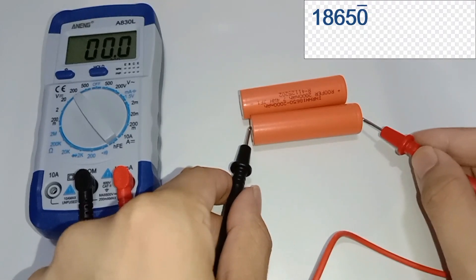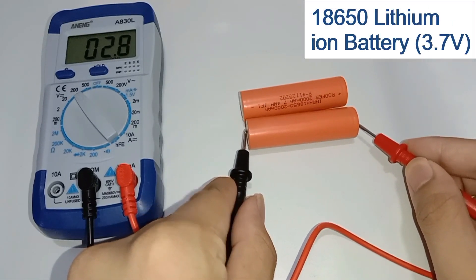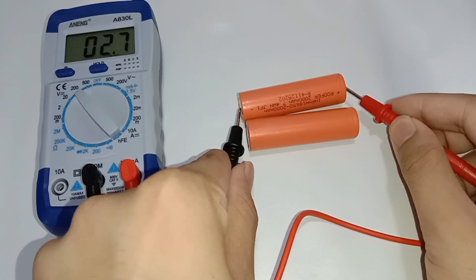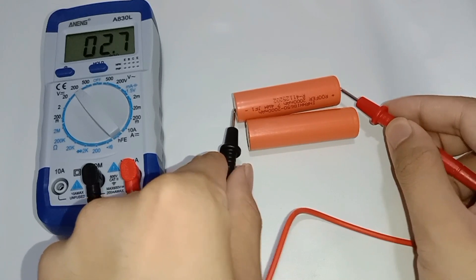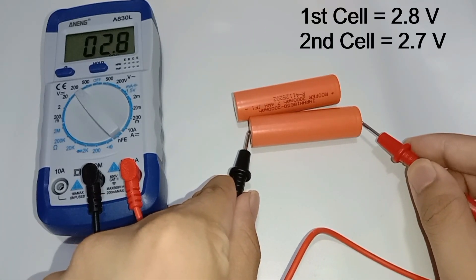Here, we have two 18650 lithium-ion batteries which are 3.7V, which we want to charge. First, we will measure this battery voltage using a multimeter. First cell gives 2.8V and second cell gives 2.7V.